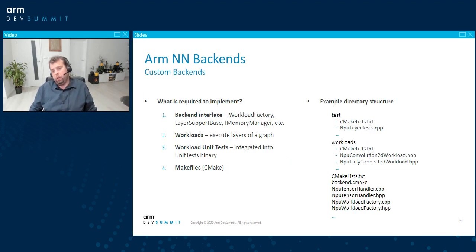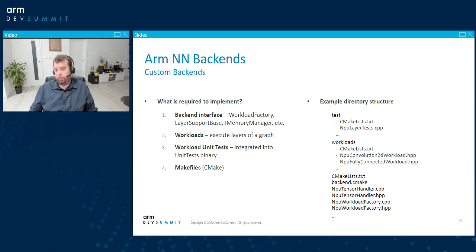It's pretty simple to implement your own backend — you just need to implement all the interfaces, all the workloads, unit tests, and makefiles. On the right you can see a folder with unit tests, a folder with workloads for convolution, fully connected layer, pooling layer, etc., and then you need to implement a few interfaces together with makefiles.